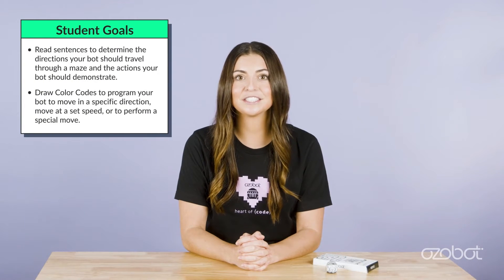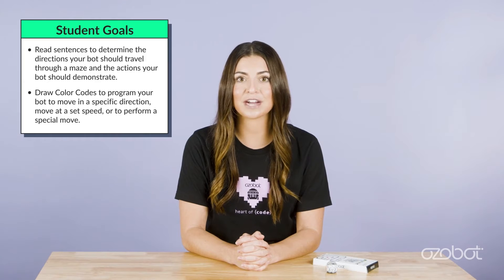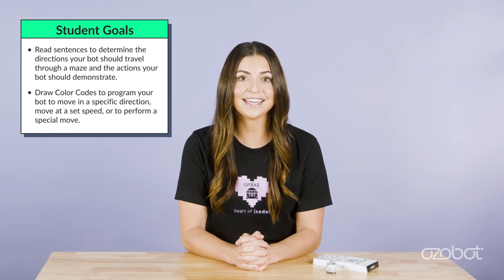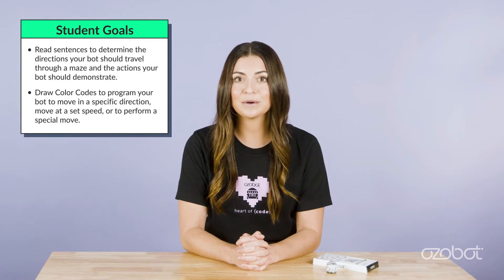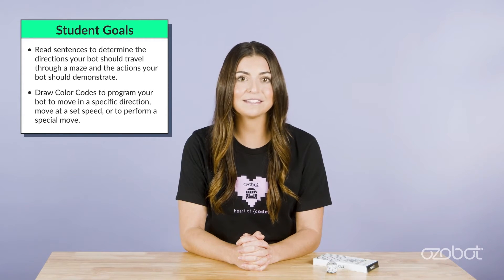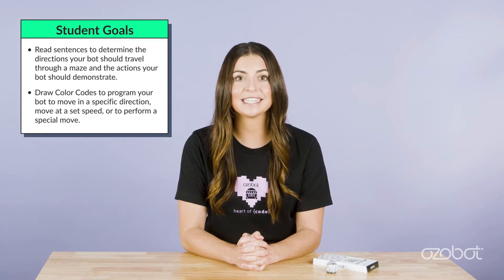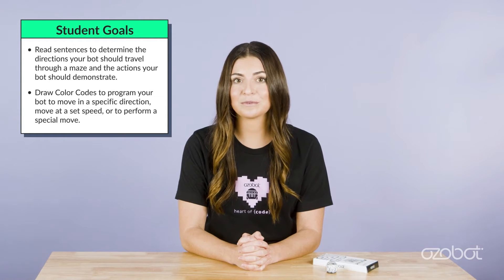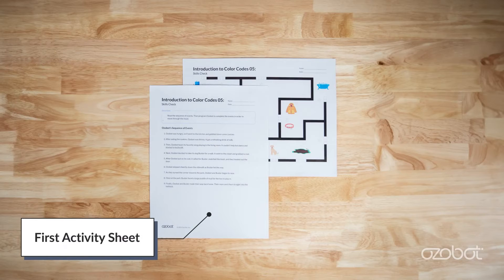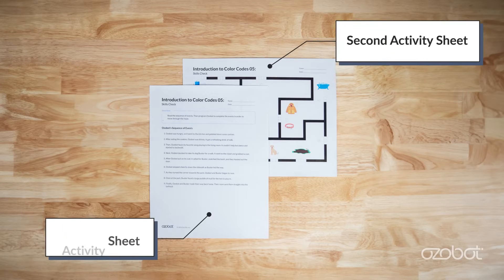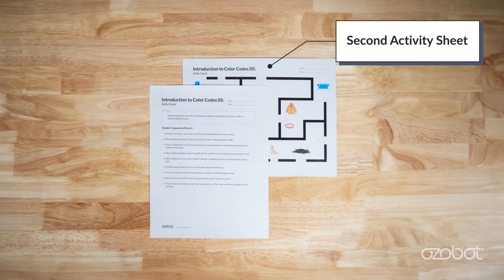In today's lesson, you will read sentences to determine the directions your bot should travel through a maze and the actions your bot should demonstrate, and draw color codes to program your bot to move in a specific direction, move at a set speed, or to perform a special move. The first activity sheet lists some events. The second activity sheet is the maze Ozobot will move through, showing the events in the correct order.